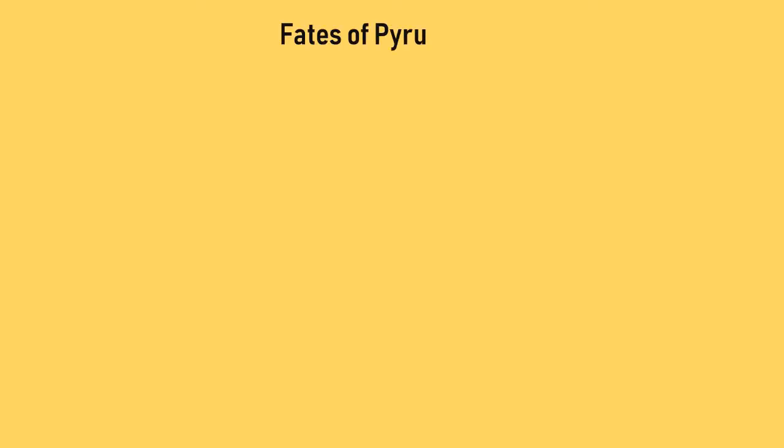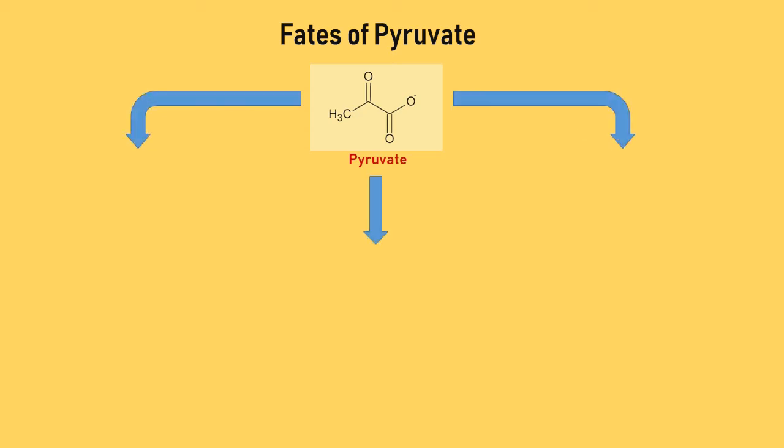Pyruvate, the end product of glycolysis, is a versatile molecule which feeds into numerous pathways. Pyruvate has three fates depending on cellular energy, availability of oxygen, and types of respiration.